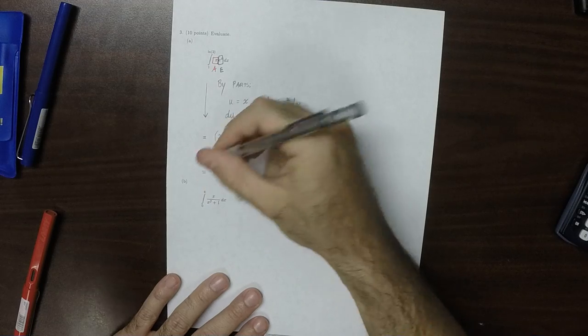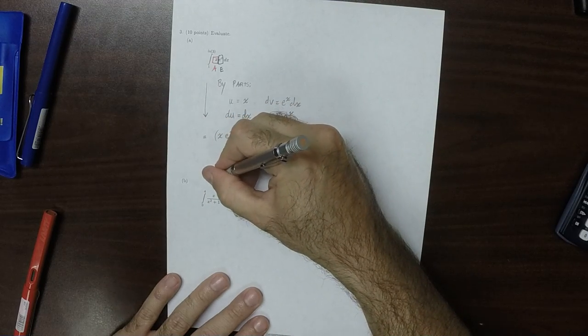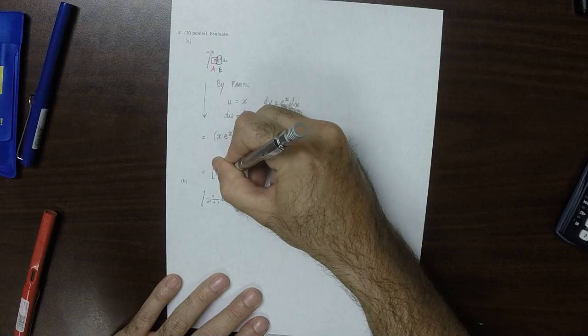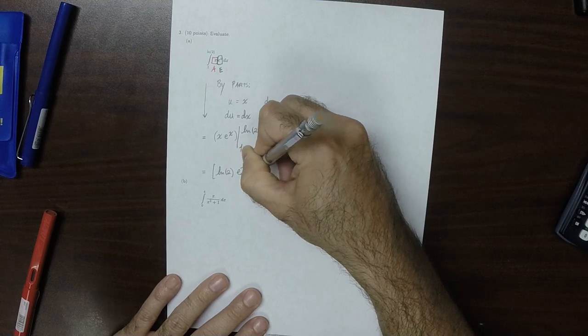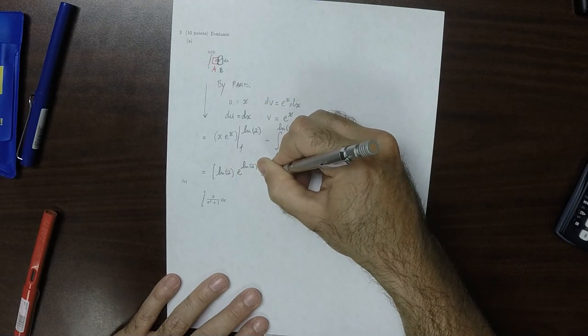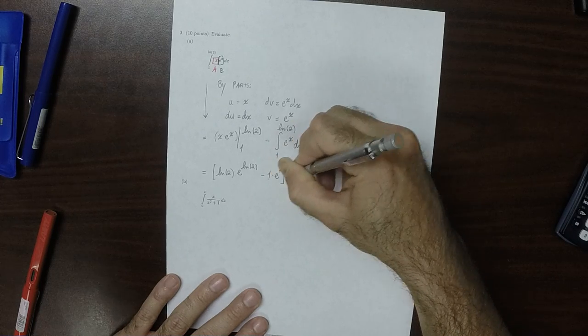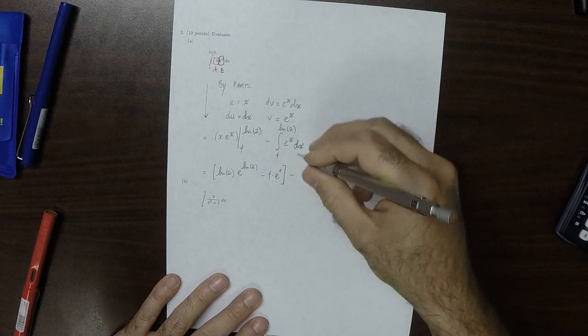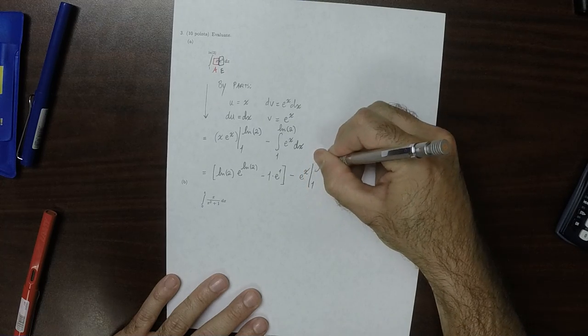So this is, so plugging in, this would be log of 2 times the exponential of the log of 2, minus 1 times the exponential of 1, and then minus e to the x evaluated from 1 to log of 2.